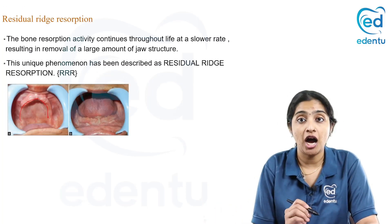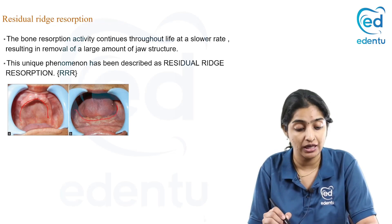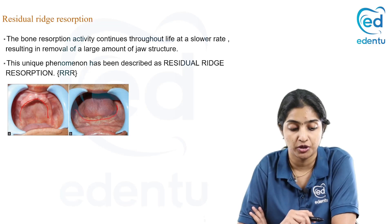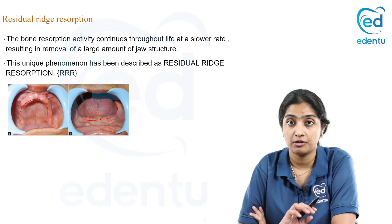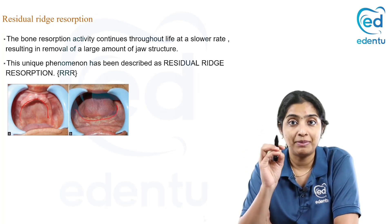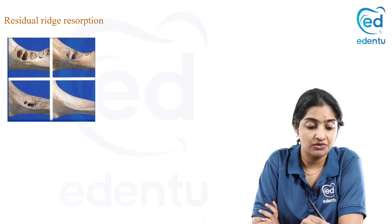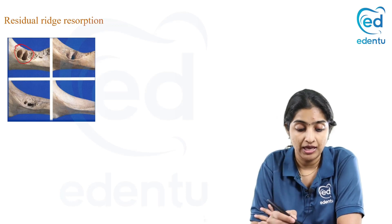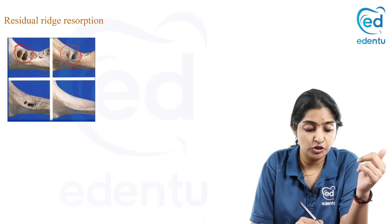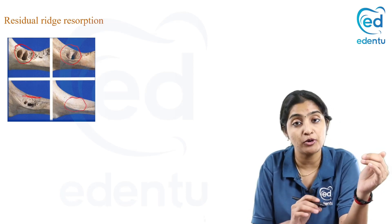This is the maxillary alveolar ridge after extraction, post-extraction and healing — the maxillary RRR and the mandibular residual alveolar ridge. Bone resorption activity continues throughout life at a slower rate, resulting in removal of a large amount of jaw structure. This unique phenomenon is the RRR process. It is not ideally a pathology — it is a physiologic process, but when excessive it is tagged as a pathology. Right after extraction you can see fresh sockets in the bone; once healing starts, bone deposition fills the socket, with slight resorption from the buccal aspect causing loss of the buccal wall, leading to the healed alveolar site.